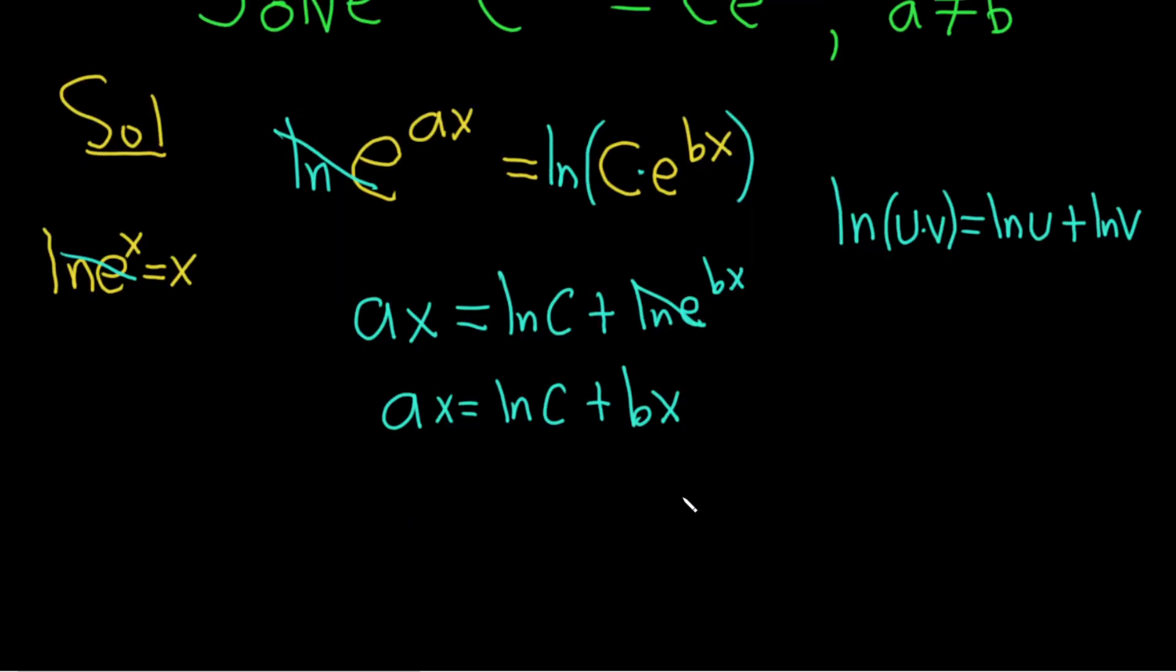So we have to solve for x. We have an x over here and an x over here. Let's put all the x's together on one side by subtracting bx. So we have ax - bx = ln(c).